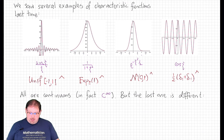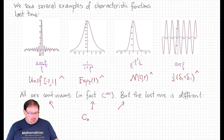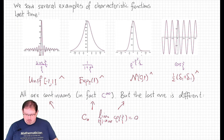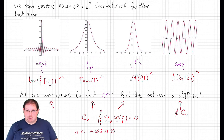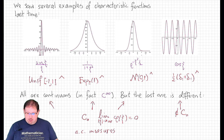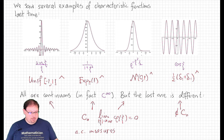But there is one difference apparent in these pictures. The first three are all C0 — that is, they decay to 0 as the variable xi goes to infinity. On the other hand, the cosine function does not satisfy that condition. This is owing to a difference between the underlying distributions. The first three are all transforms of absolutely continuous measures; these three have densities with respect to Lebesgue measure, while this one does not. And in fact, that is a theorem — although it goes under the name of a lemma, the Riemann-Lebesgue lemma.